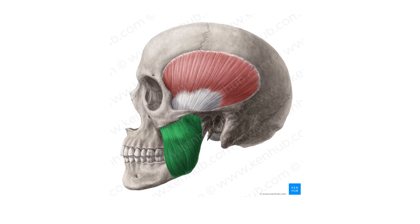Now moving on to the muscles present in the infratemporal fossa — there are four muscles, also known as the muscles of mastication. First is the temporalis muscle, which is a fan-shaped muscle. It originates from the superior temporal line and inserts at the coronoid process of the mandible.